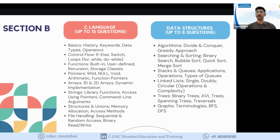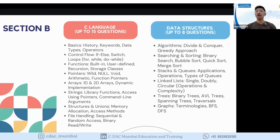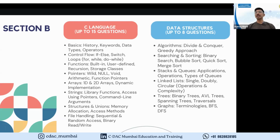Data structures is the next segment. Many questions are based on code snippets — 4 to 5 lines of code where you must identify the output. Topics include algorithms, searching and sorting, stacks, queues, linked lists, trees, and graphs. You need to know what they are, how they work, their strategies and methods, and their time and space complexities. Together, C language and data structures account for about 25 out of 50 marks in Section B.